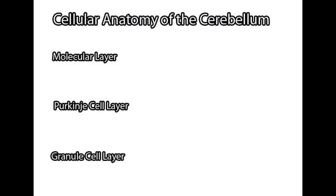In order to understand how the cerebellum accomplishes those three things, we have to appreciate how the components of the cerebellum are hooked up. The cellular anatomy of the cerebellum has three layers. The first, or most superficial, is known as the molecular layer. It is closest to the surface of the cerebellum and contains the dendrites, or information-receiving parts, of the Purkinje cells.